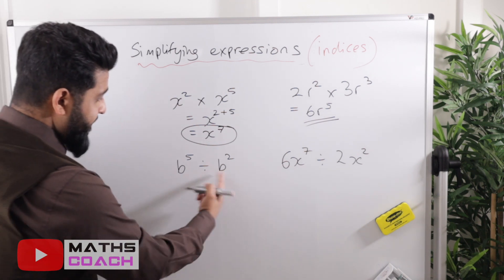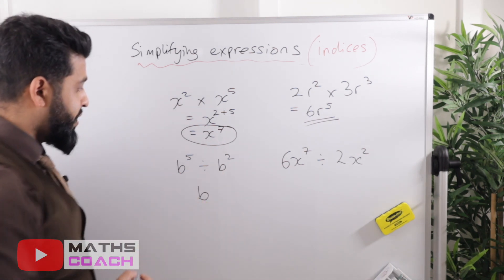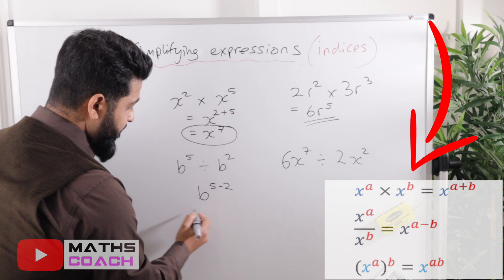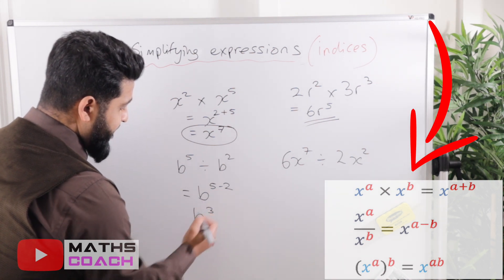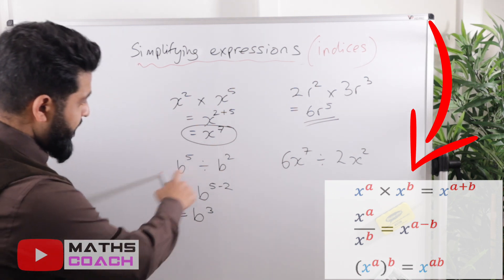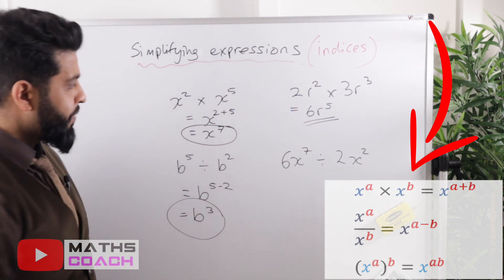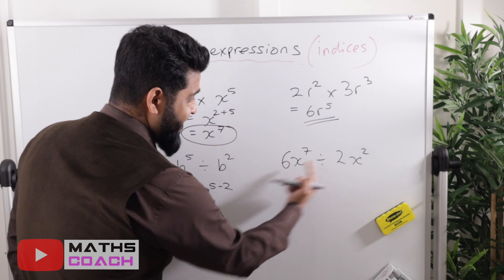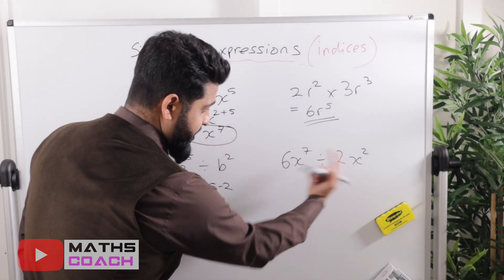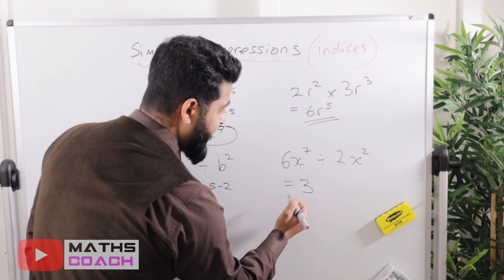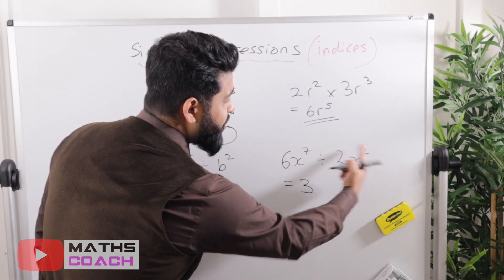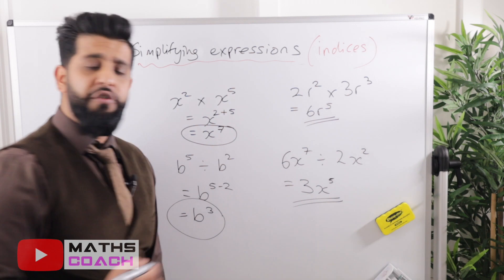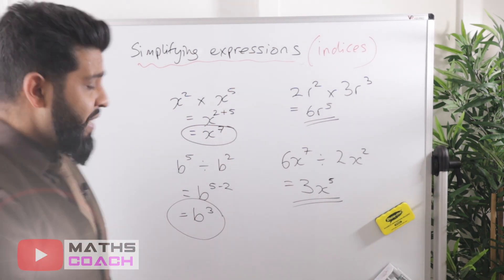For division, when the bases are the same, we subtract the powers. So b⁵ divided by b² gives b to the power of 5 minus 2, which is b³. For 6x⁷ divided by 2x²: the coefficients divide normally, 6 divided by 2 equals 3; then subtract the powers, 7 minus 2 equals 5. The answer is 3x⁵.